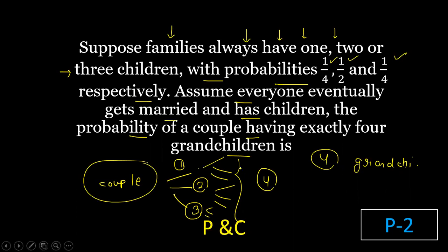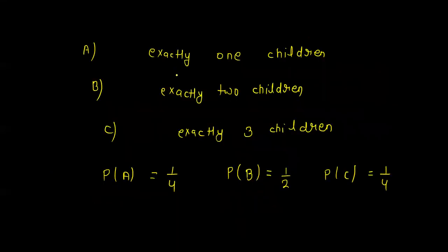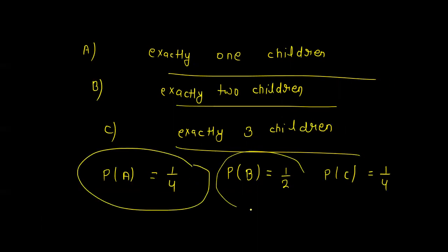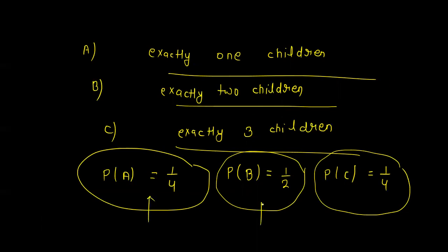What should each child produce to give exactly 4 grandchildren? The probabilities given to us are: exactly one child with probability 1/4, two children with probability 1/2, and three children with probability 1/4.